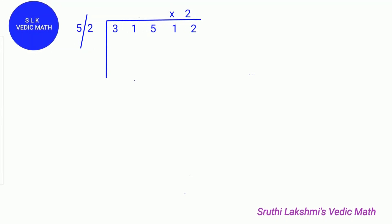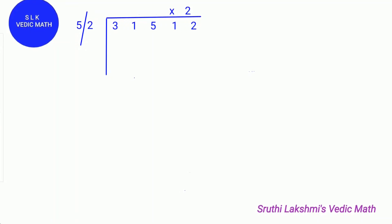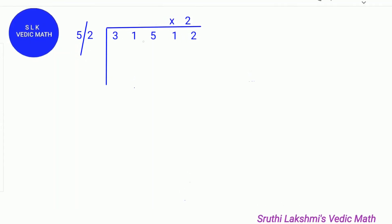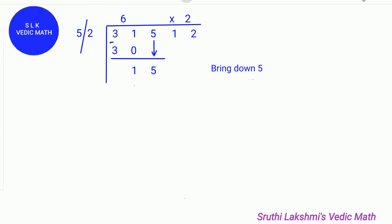First put a slash separating the last digit 2 from the rest of the digits. First find how many 5s can fit in 31. Six 5s can fit in 31, so write 6 on the quotient line and do 5 times 6, which is 30. Write 30 below 31, so we do 31 minus 30, which gives 1. Next bring down 5.